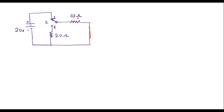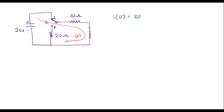Current flows only through the 10 ohm resistor and this forms a closed loop. Let me assume the current through the circuit is I of 0 minus — that is, before the switching operation. So I of 0 minus is equal to V divided by R, that is 20 volts divided by 10 ohms, which equals 2 amps. Before switching, the current in the circuit is 2 amp.